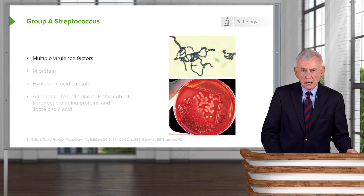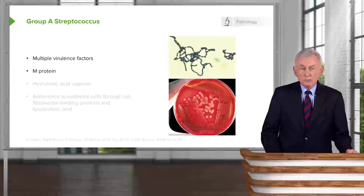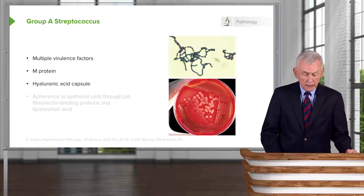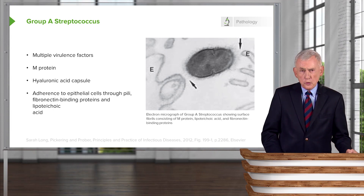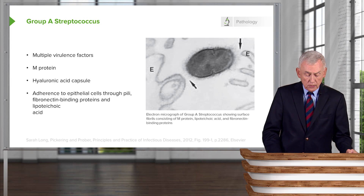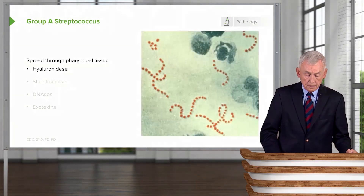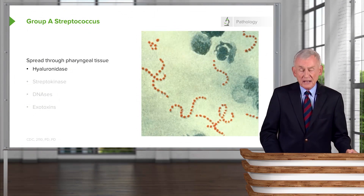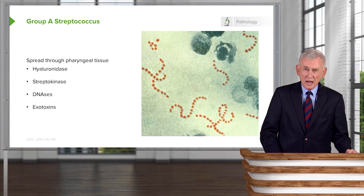The pathogenesis of pharyngitis caused by group A strep involves multiple virulence factors, the most important of which is M protein. It also has a hyaluronic capsule. Group A strep adheres to epithelial cells of the pharynx through structures called fimbriae, or pili, which contain fibronectin binding proteins and lipoteichoic acid. Once it adheres, it spreads through pharyngeal tissue via enzymes such as hyaluronidase, streptokinase, DNases, and a variety of exotoxins. This is a very virulent organism.